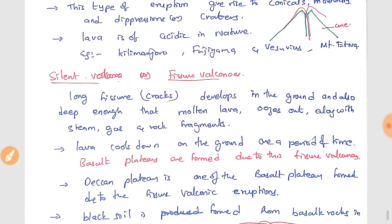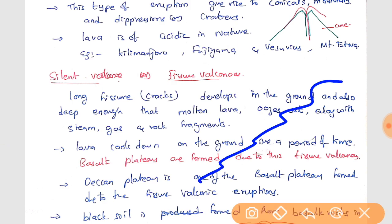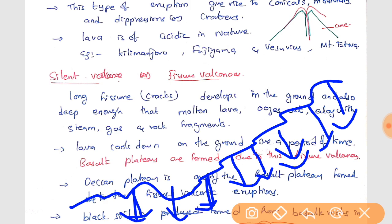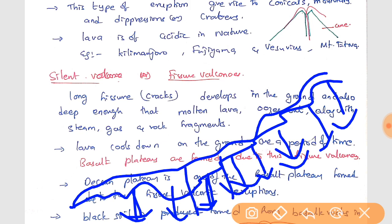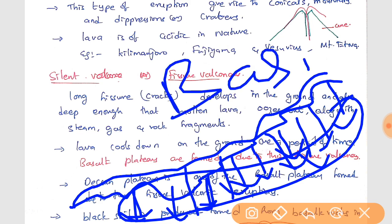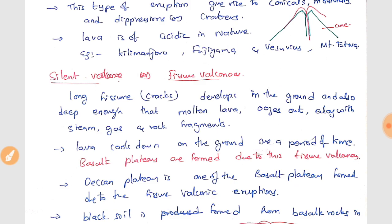Silent volcanoes, also called fissure volcanoes, have cracks on the ground through which lava oozes out silently — without any sound or blast. The lava simply flows out through the fissures or cracks, like water coming out of the ground. This type of lava is mostly basic in nature.